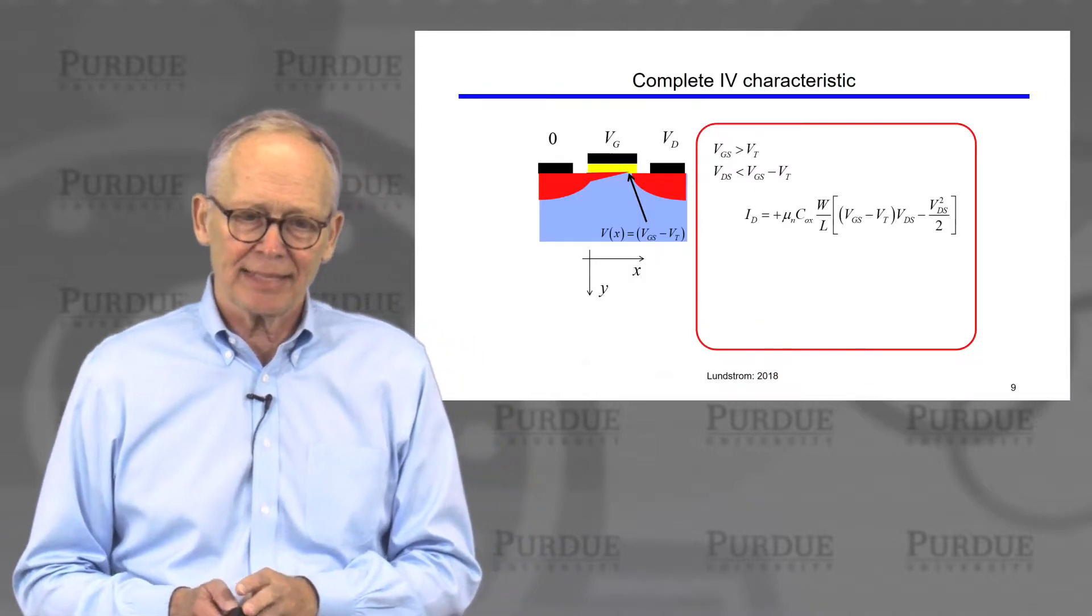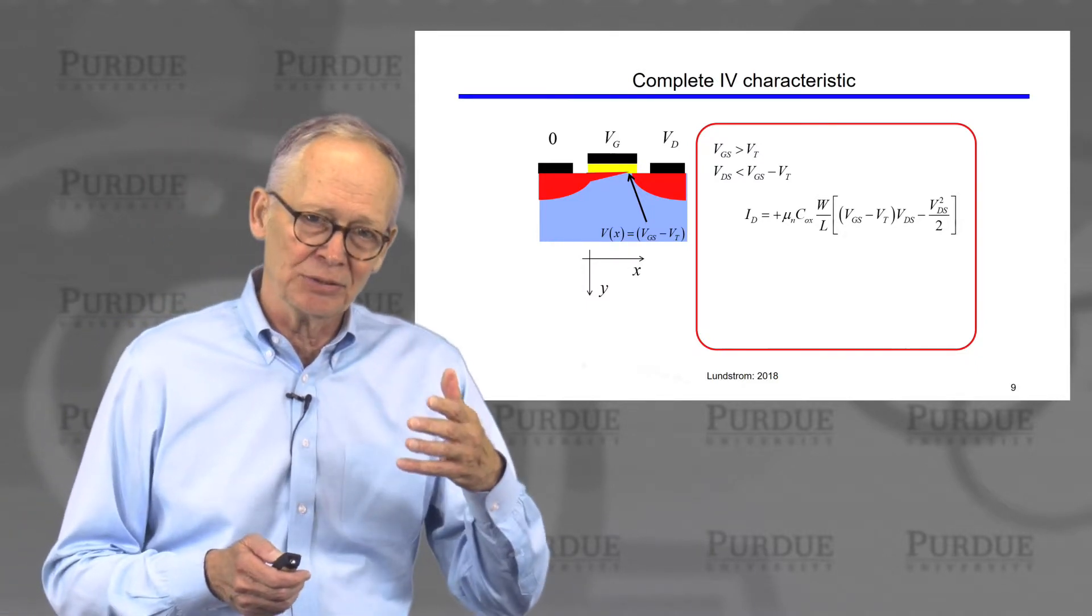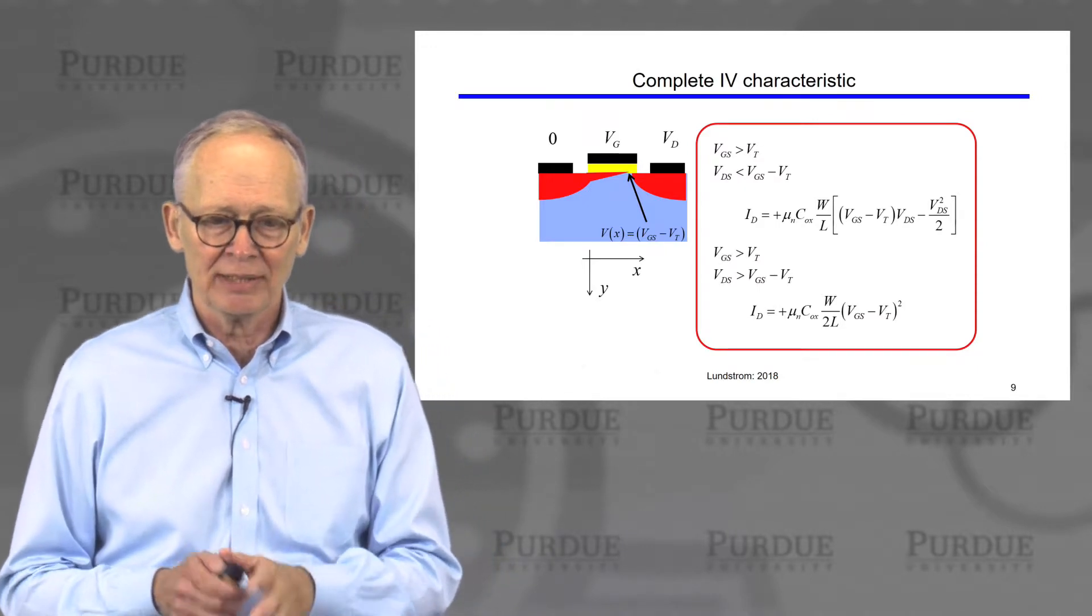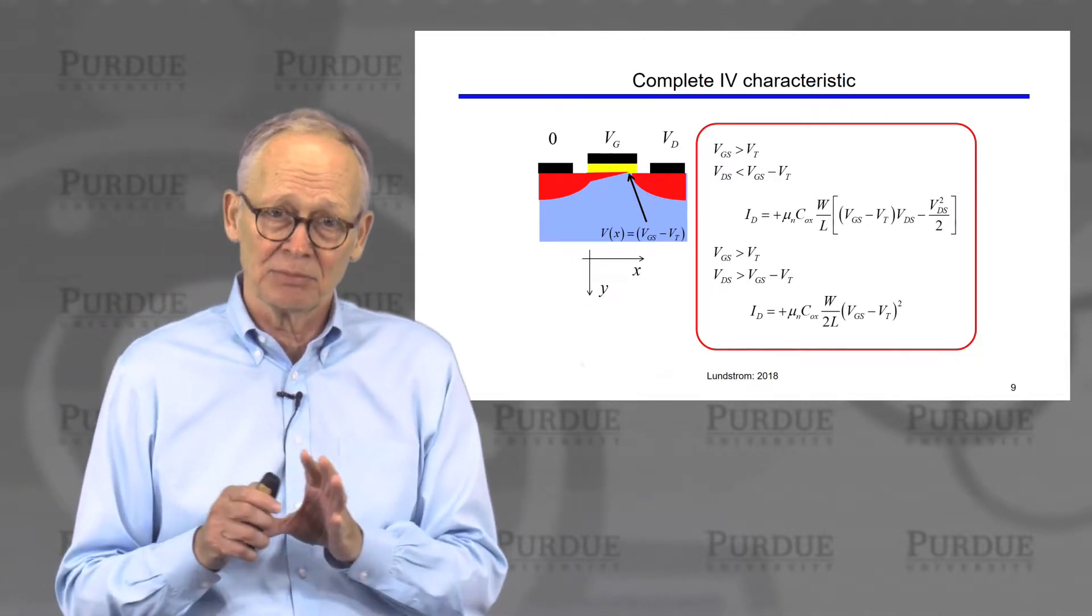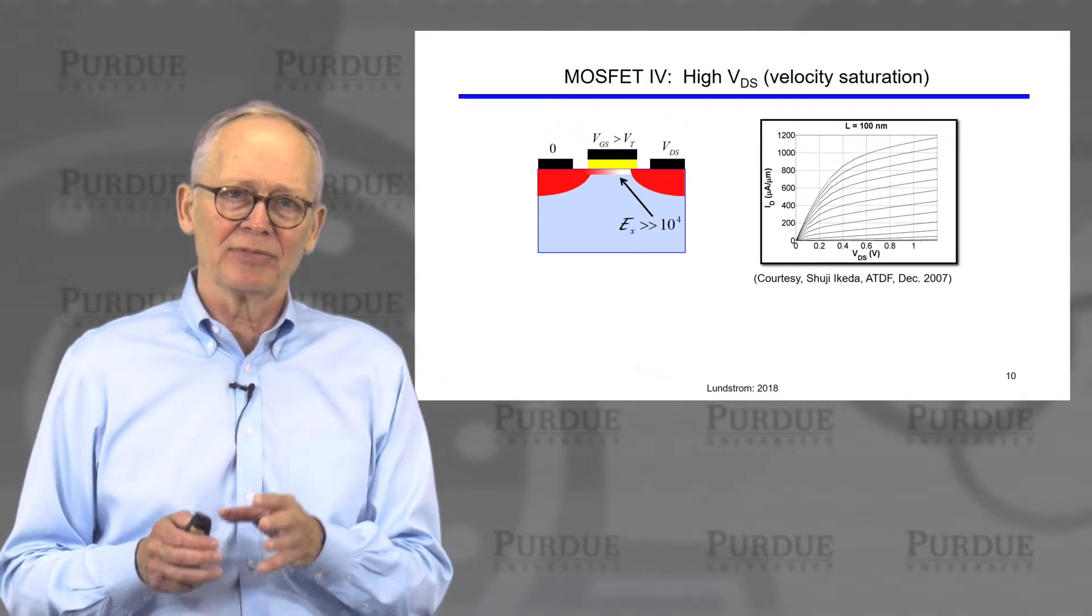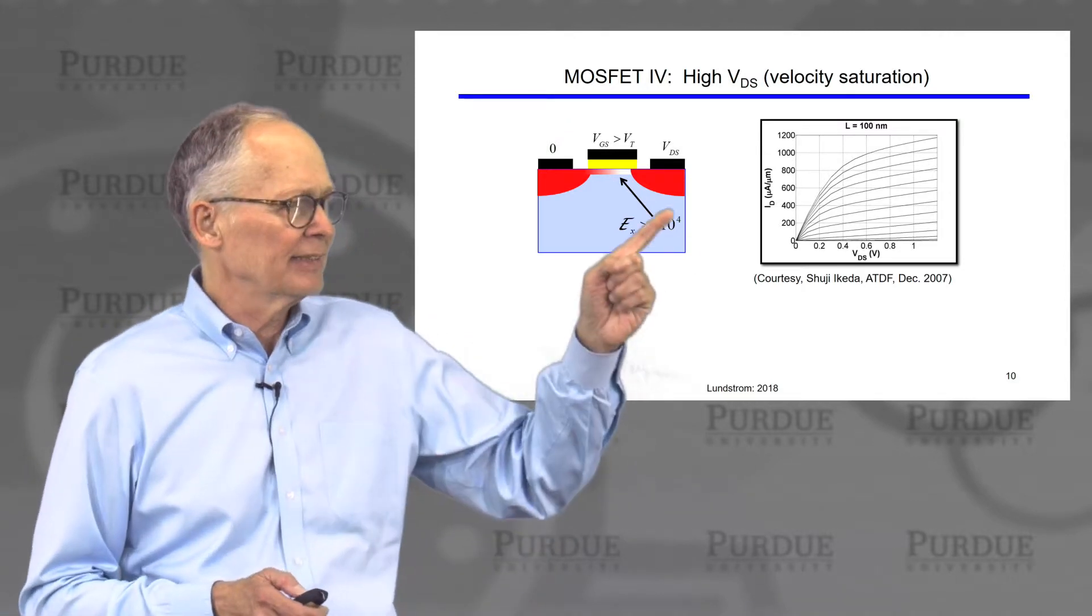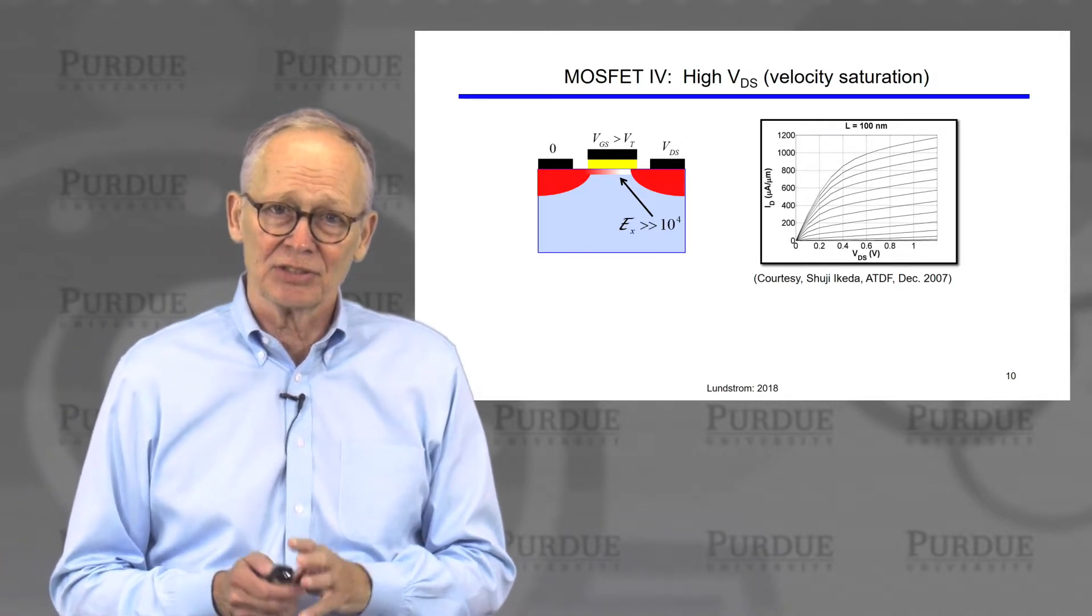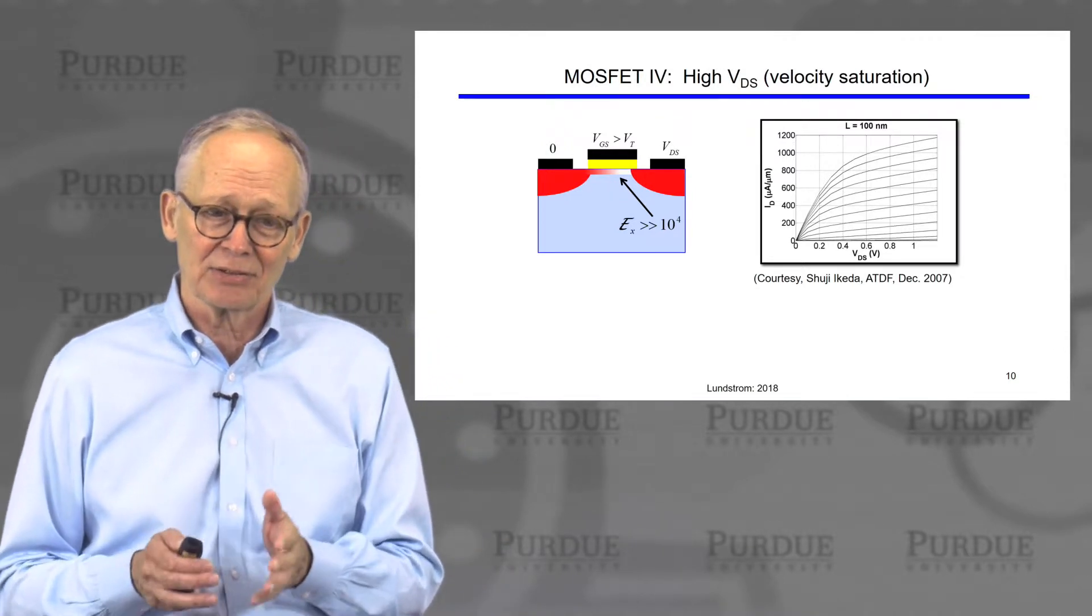We took the next step and actually went through a complete IV derivation so that we could not only do linear regime and saturated regime, we could do the triode regime in between, and we saw how you can get a full description of the IV characteristic that is continuous from linear to saturation. Then we switched to the case that is more descriptive of modern transistors, the so-called velocity saturation case. What we argued there is that the electric field is very high in these very short channel transistors. Even if the voltage on the drain is small, the channel length is so incredibly short that the electric field is very high.